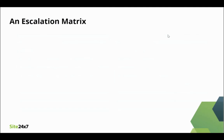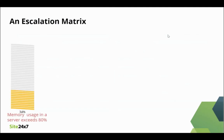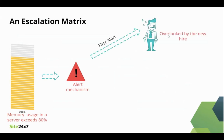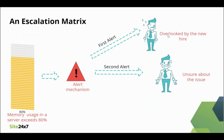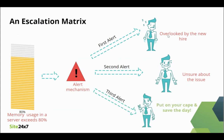Here's a quick example: the first alert on excessive memory usage in a server, overseen by a new hire, can be triggered a second time to the lead engineer. The third alert can then be sent to you, so that the issue is not swept under the carpet and is resolved before it turns into something big.